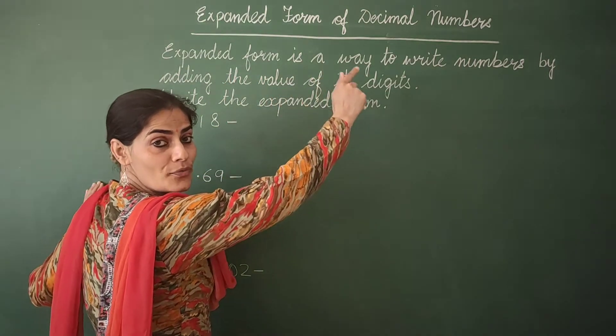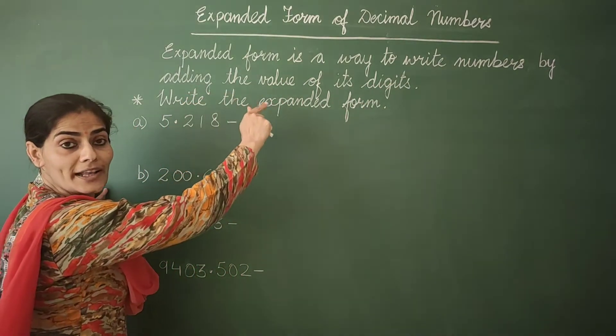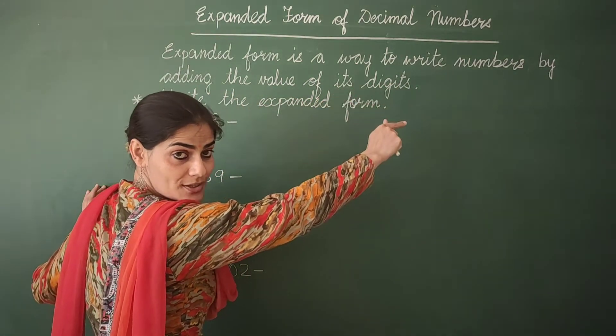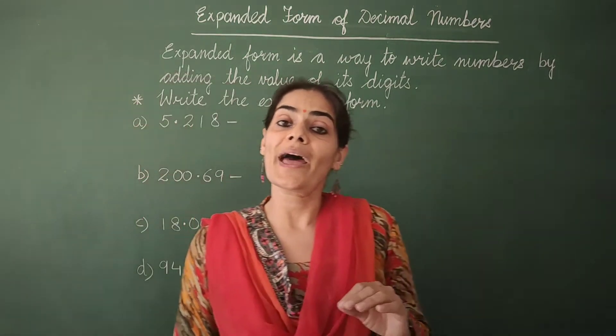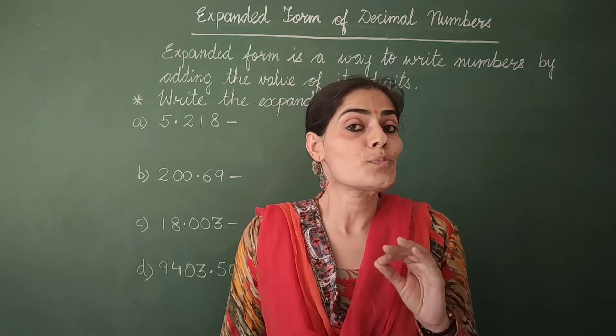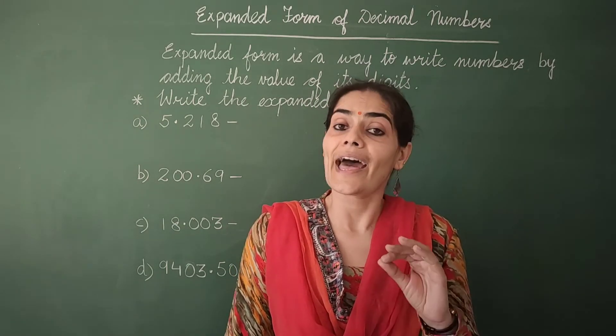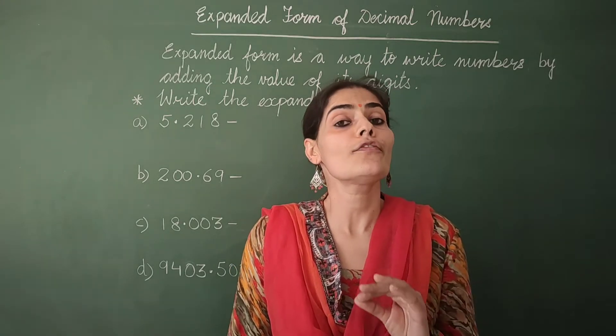Expanded form is a way to write numbers by adding the value of its digits. Or in other words, we can say, expanded form of a number is the way of expressing that number as the sum of place values of all its digits.